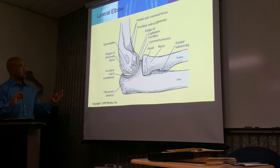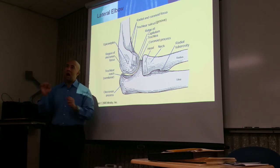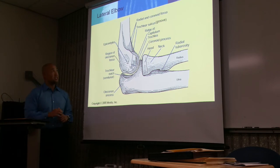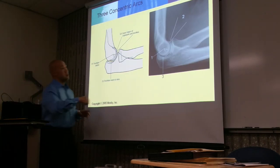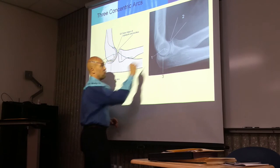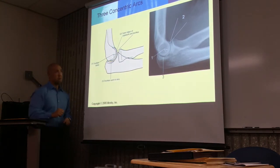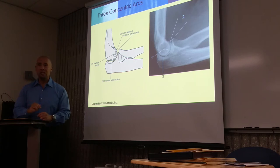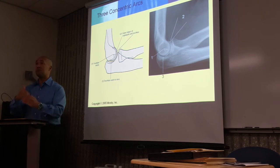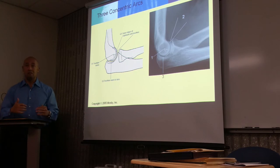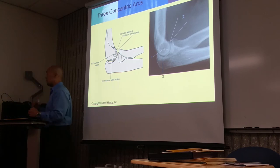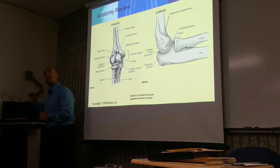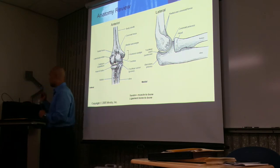When doing a lateral elbow, one of the structures you see is known as the concentric arches. You're going to see three arches forming. This is what you will visualize in a true lateral. These concentric arches are formed by superimposition of the anatomy from the ulna. The first one is formed by the trochlear sulcus.